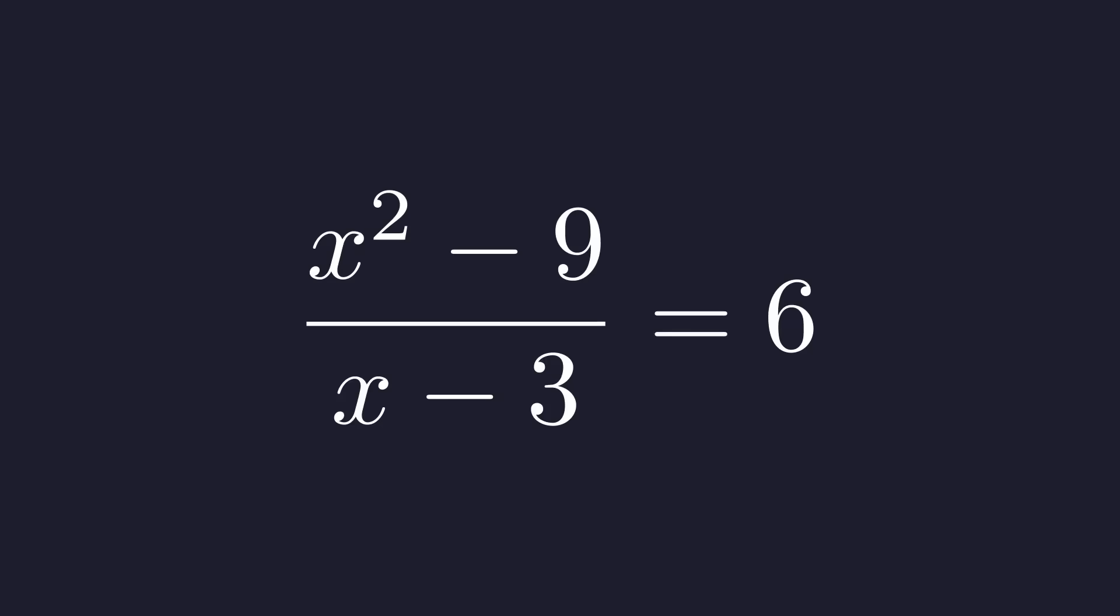That way, we have something squared minus something else squared. So now we have x² - 3², which fits the pattern a² - b².